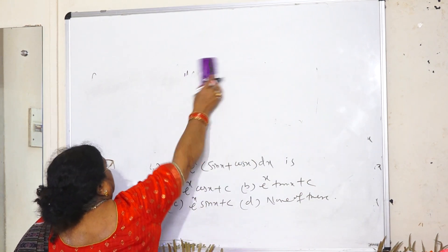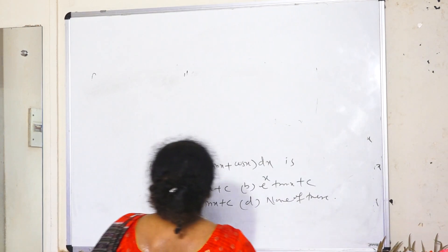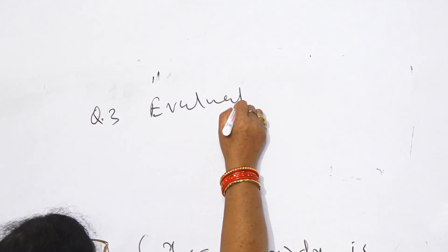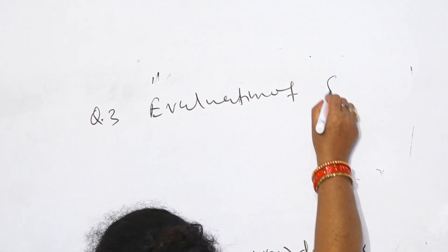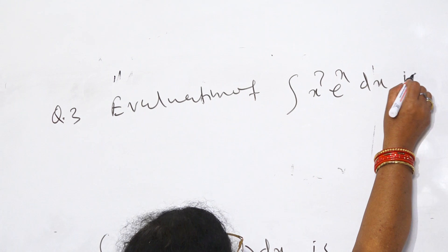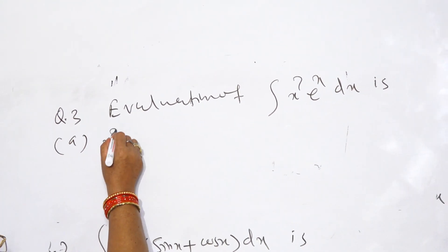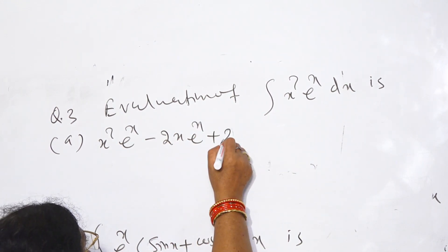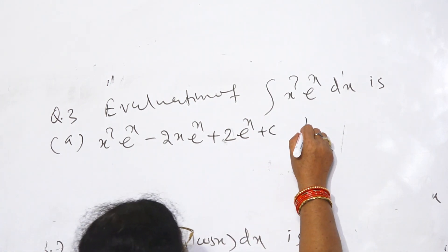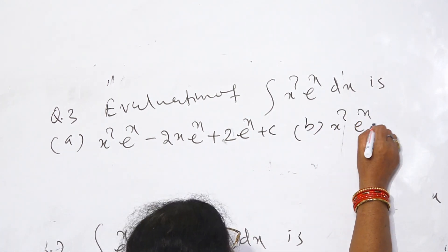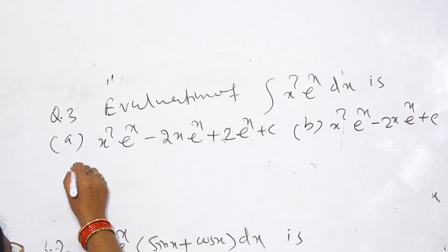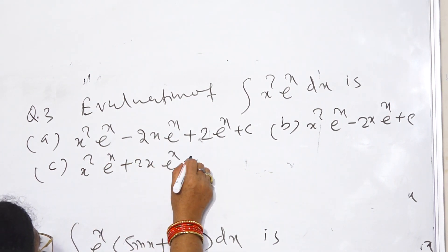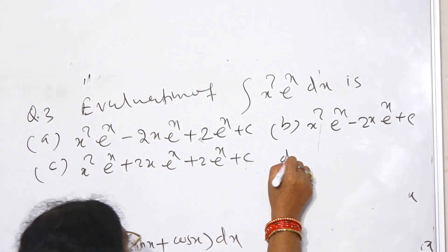Question number 3: Evaluate integral of x² e^x dx. A: x²·e^x minus 2x·e^x plus 2e^x plus c. B: x²·e^x minus 2x·e^x plus c. C: x²·e^x plus 2x·e^x plus 2e^x plus c. D: none of these.